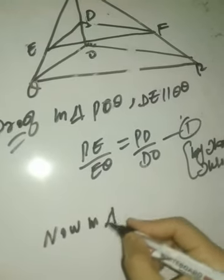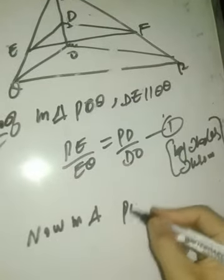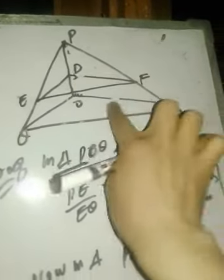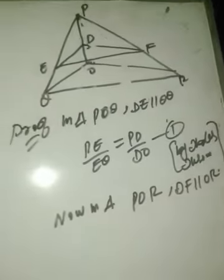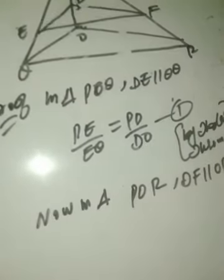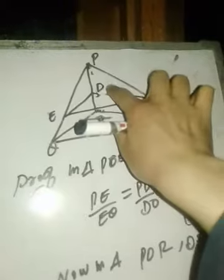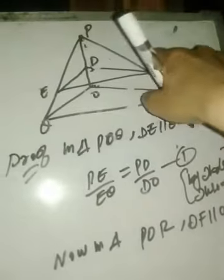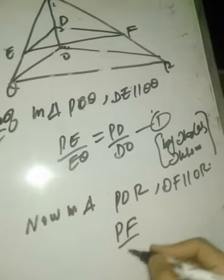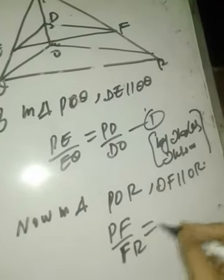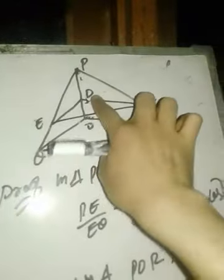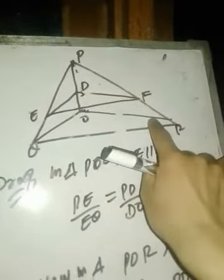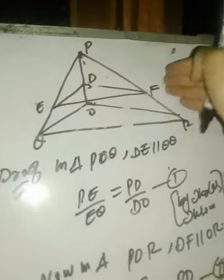Now in triangle POR, it is given that DF is parallel to OR. So by Thales' theorem — if a line is drawn parallel to any side of a triangle, the other two sides are divided in the same ratio — we get PD/DO = PF/FR. We can also write this as PF/FR = PD/DO. Name this equation (2), reason again by Thales' theorem.